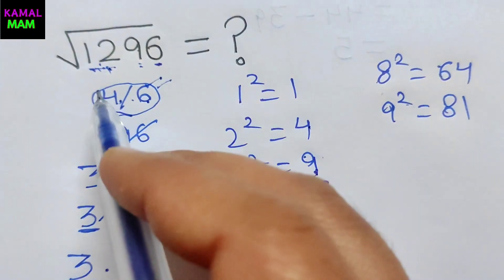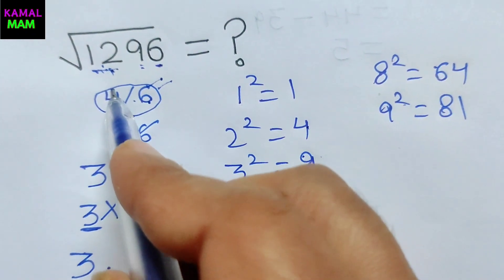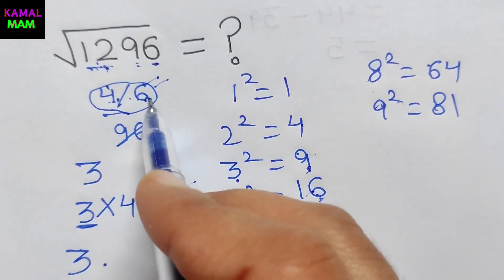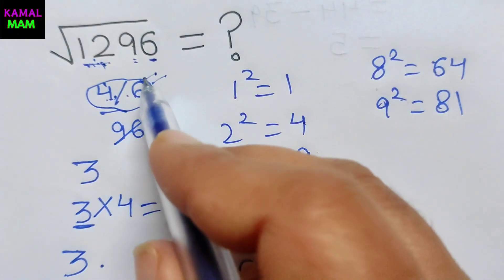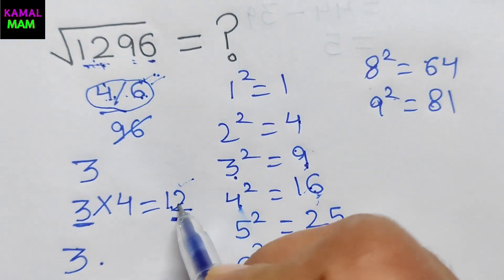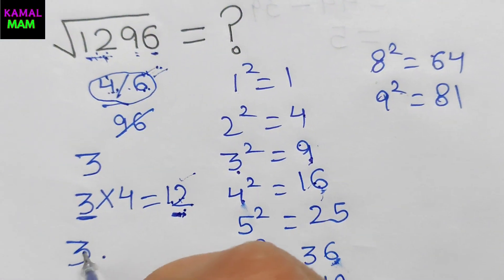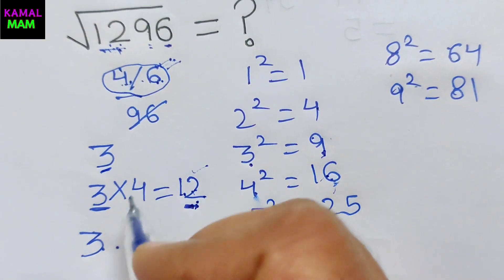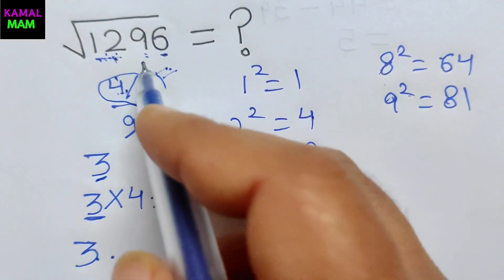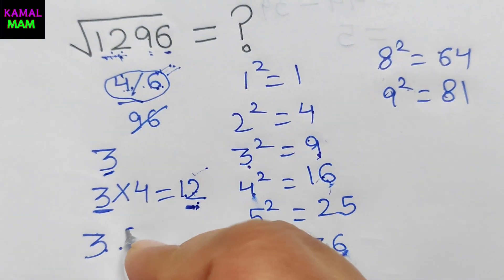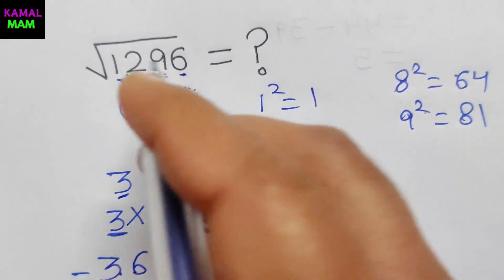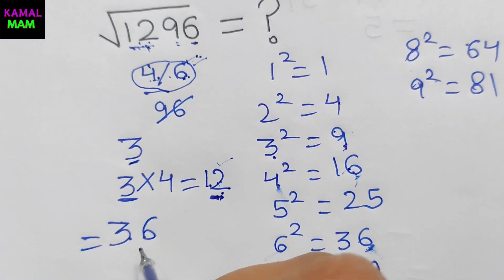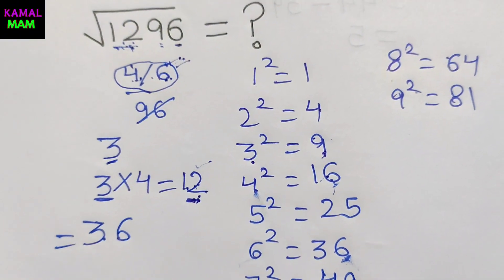So we choose the largest number. The first digit is 3, and the second digit is 6 — the largest option. Therefore, the square root of 1296 is equal to 36. That is our final answer. Thanks for watching.